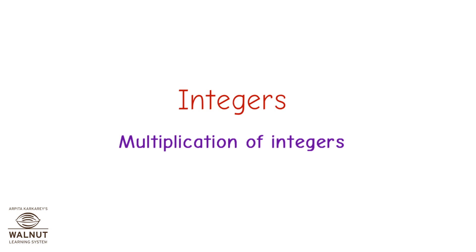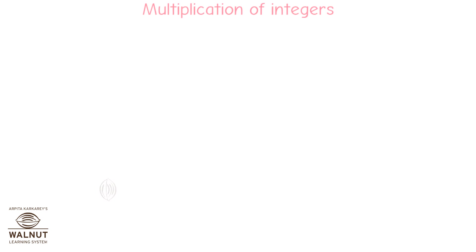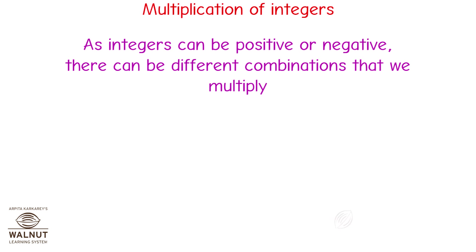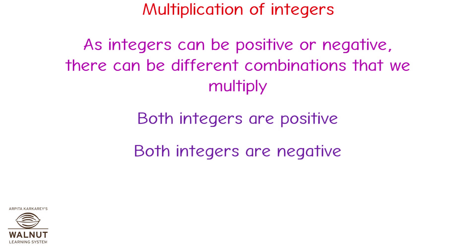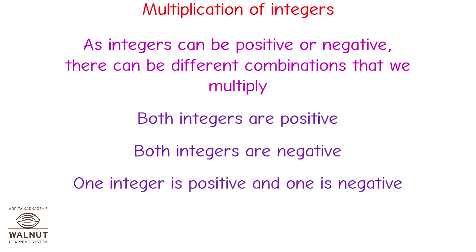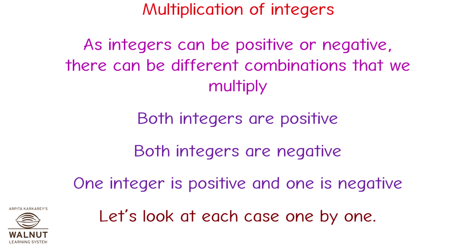Integers: multiplication of integers. As integers can be positive or negative, there can be different combinations that we multiply: both integers are positive, both integers are negative, or one is positive and one is negative. Let's look at each case one by one.